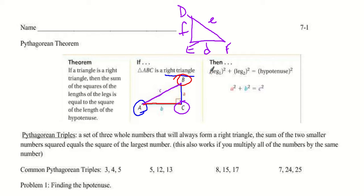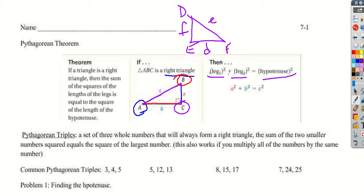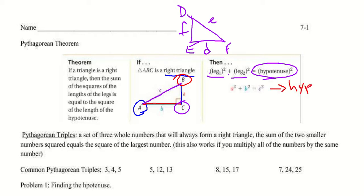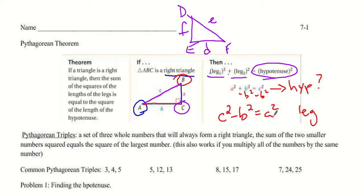The formula is: the sum of the two legs squared equals the hypotenuse squared. The standard form is a squared plus b squared equals c squared, which we use when finding the hypotenuse. If we're trying to find a leg, we subtract b squared from both sides and get c squared minus b squared equals a squared.